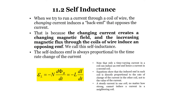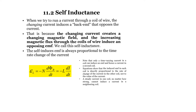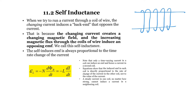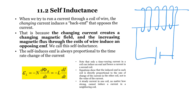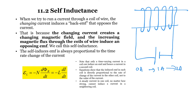Now let's proceed with self-inductance. If you only have one coil and you connect it to a potential difference, is there any induced EMF? Definitely yes. When you have a change of current from 0 ampere increasing to 1, 2, 3 amperes, you will have a change of magnetic flux, which means the coil will self-induce.